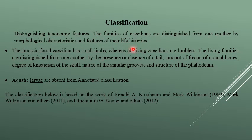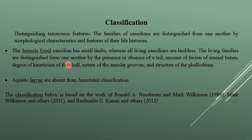Classification and morphological characteristics include the structure of the body. In the Jurassic period, they had small limbs, but now all Caecilians are limb-free. The presence of a tail, fusion of cranial bones, and teeth are also distinguishing features. Aquatic larvae were also present in some.